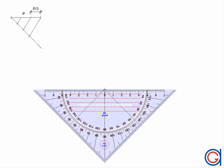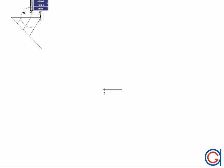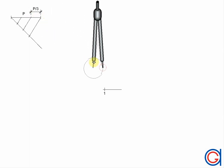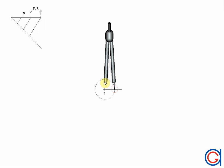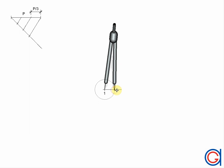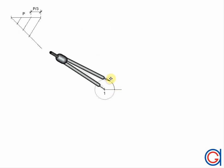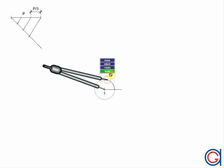Now in the center of the drawing we mark the first center, called point one. From this center point we draw a horizontal line to the right. With our compass set to the length of P/3, we transport this length onto the horizontal line. Then with our compass centered on point one, we scribe an arc to the left which cuts our horizontal line at a point which will be the second center.